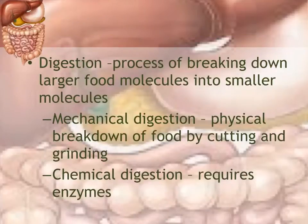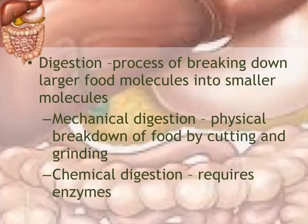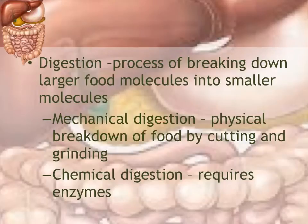Digestion is the major process of breaking down food from larger molecules into smaller molecules — small enough to pass through the lining of the intestine. There are two types: mechanical digestion, which is the physical breaking down of food by cutting, grinding, or smashing; and chemical digestion, which requires an enzyme because mechanical digestion can only break pieces down so small. After a while, enzymes need to get involved to break food into even smaller pieces.